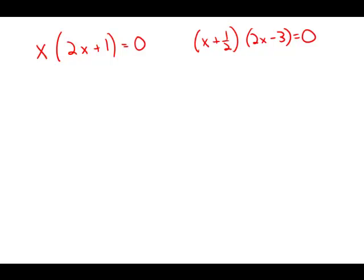We're given these two algebraic equations: x times the quantity 2x plus 1 equals 0, and the quantity x plus 1 half times the quantity 2x minus 3 equals 0, and we're asked to solve for x.